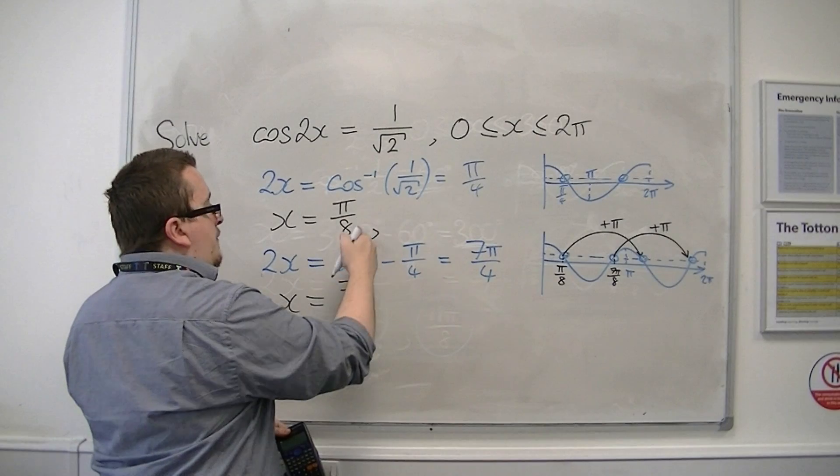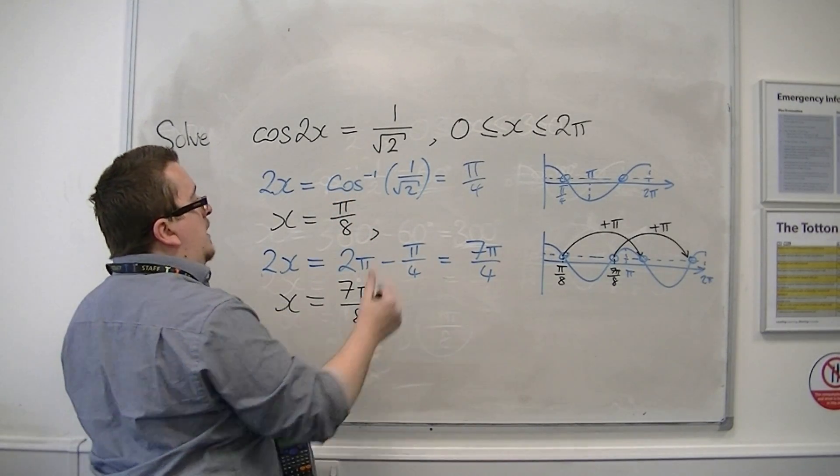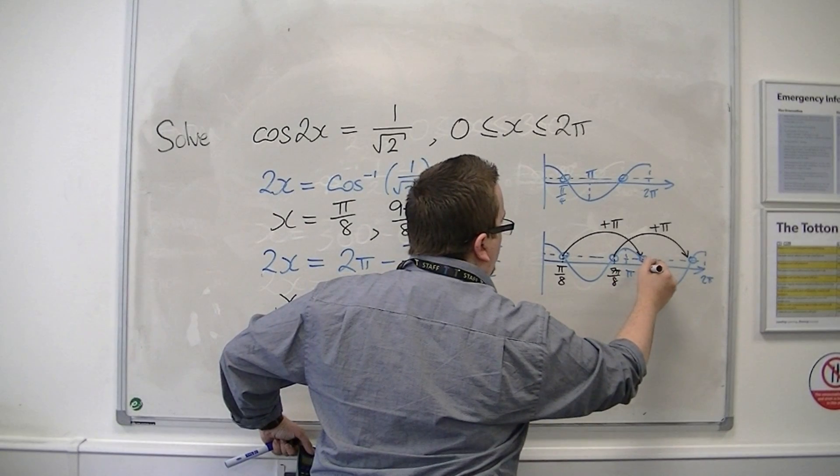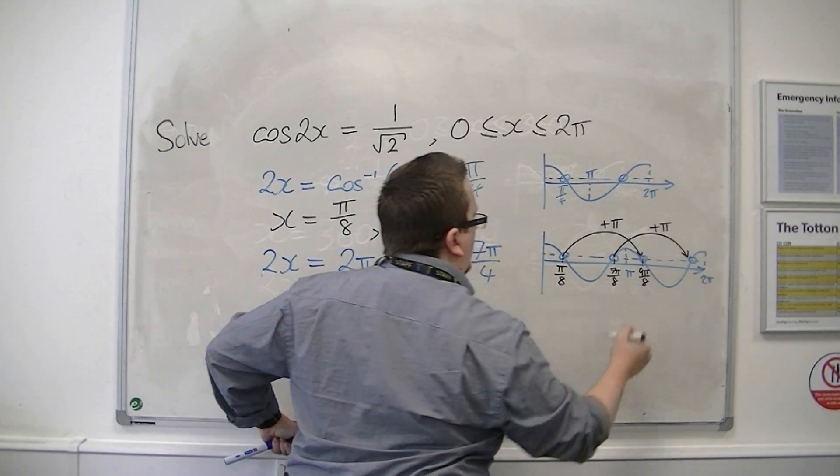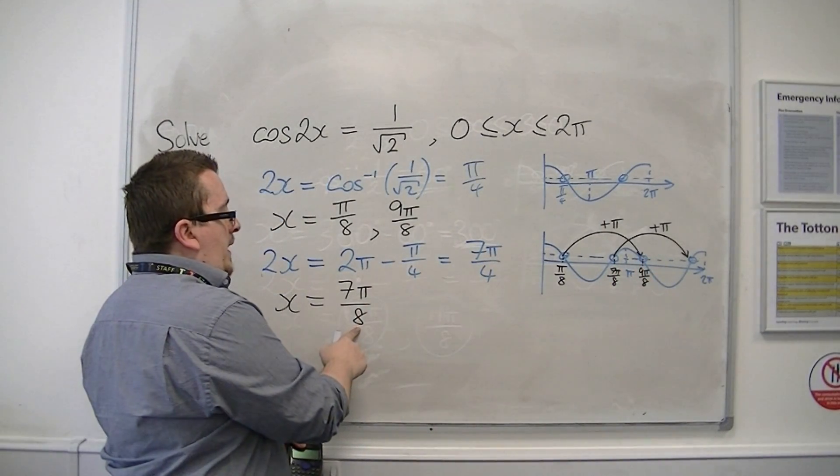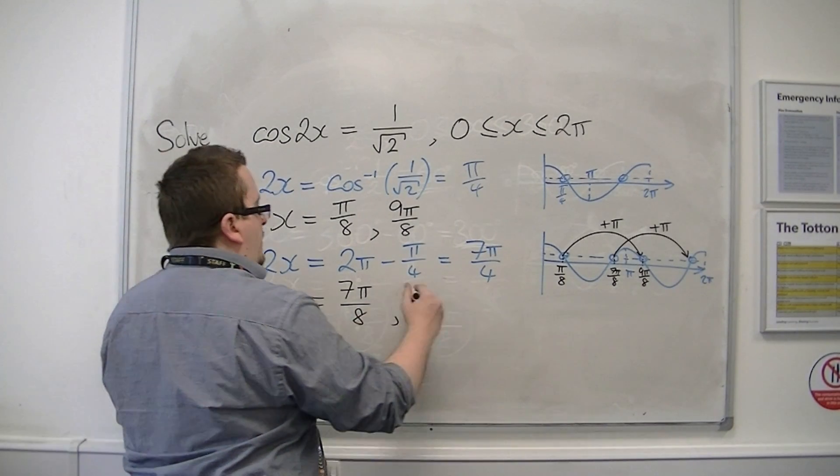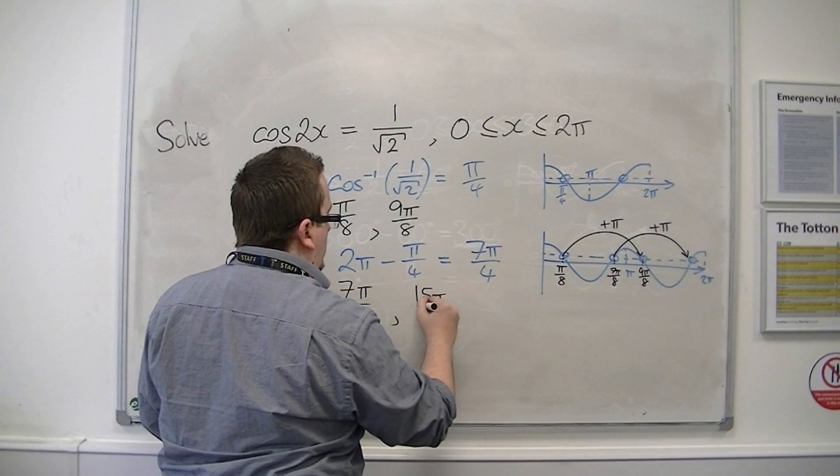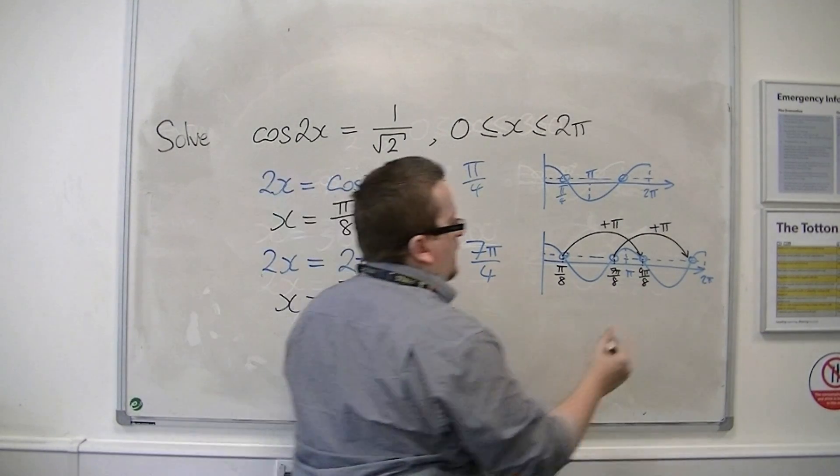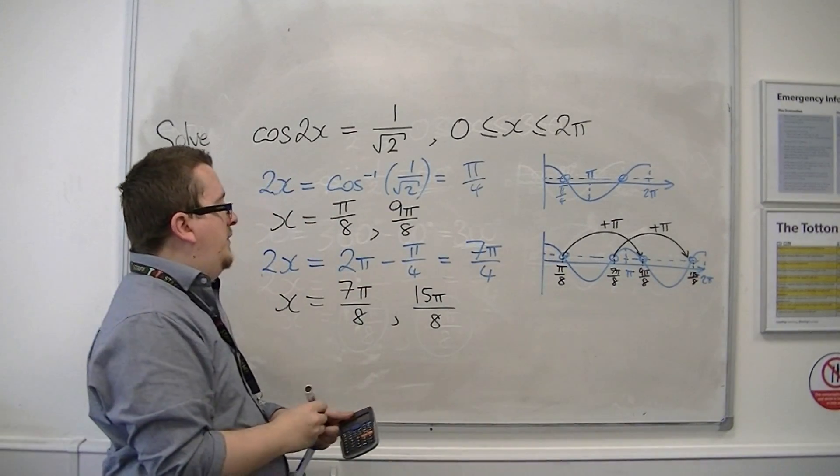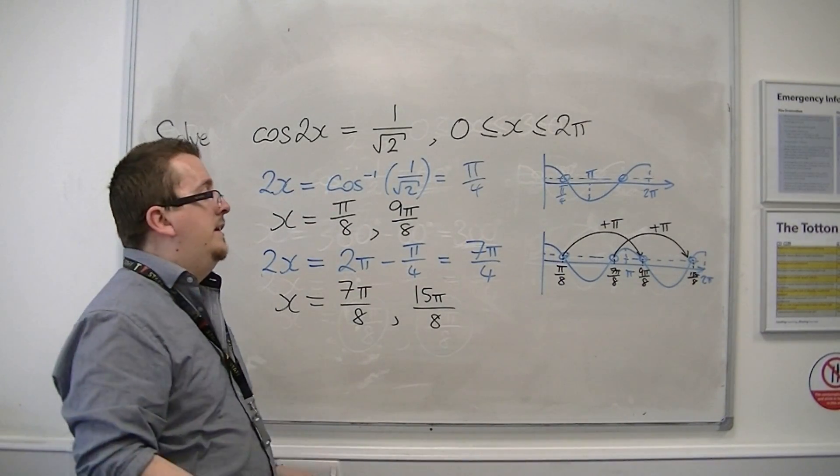So add pi. So pi over 8 plus pi will get me 9pi over 8. So that's this solution. And then 7pi over 8 plus pi will get me 15pi over 8.